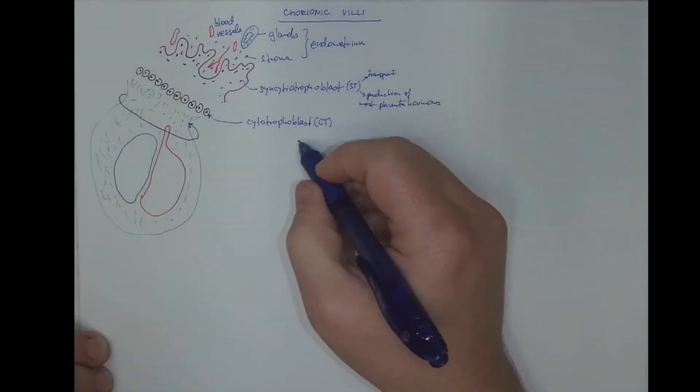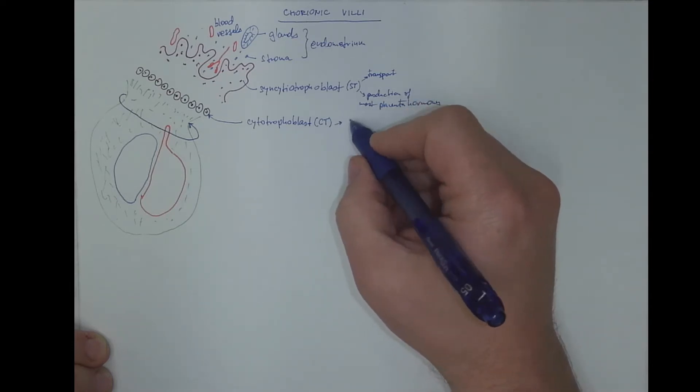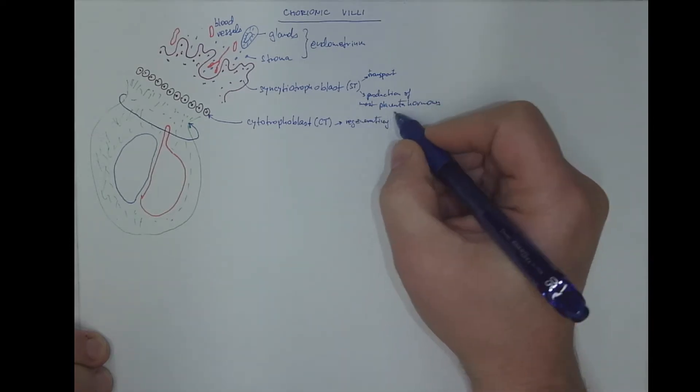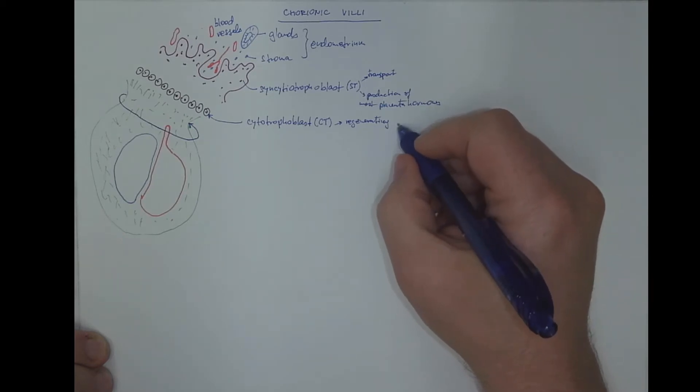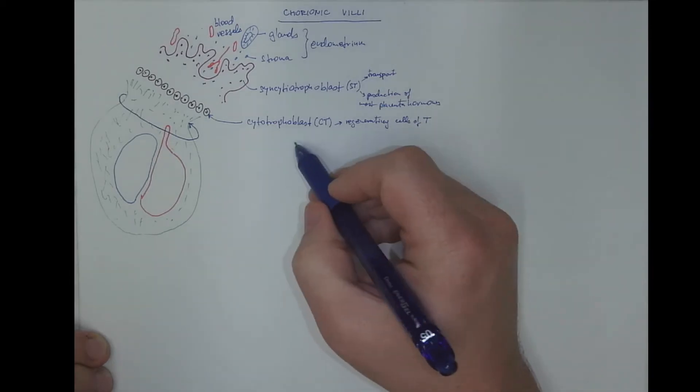The cytotrophoblast serves as a source of regenerating and growing cells of the trophoblast, and the cells contain some glycogen.